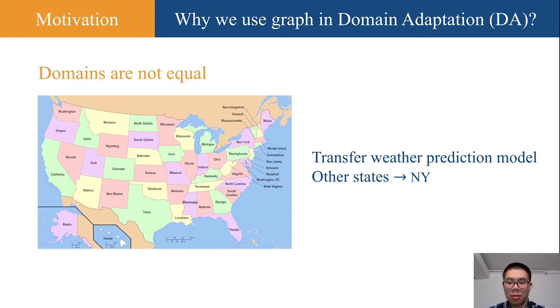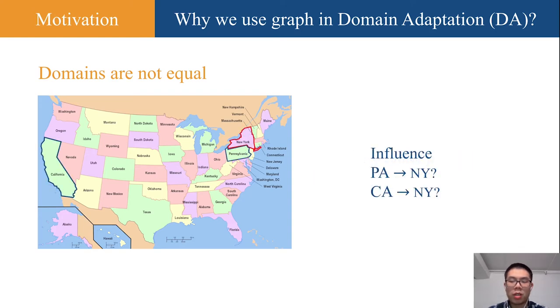Let's see an example. Suppose now we are transferring a weather prediction model trained on other states to New York State. Intuitively, New York should be influenced more from model trained in Pennsylvania rather than California.